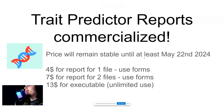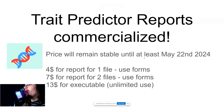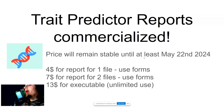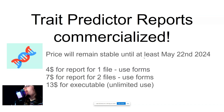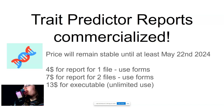At May 22nd I might change the price or I might not, but until that point it is going to stay exactly what it is right now. Right now it is $4 for a report for one file, $7 for a report for two files, and $13 for the executable which has unlimited use. If you bought the executable you can use it with however many files you want. So one file is $4, two files is $7.